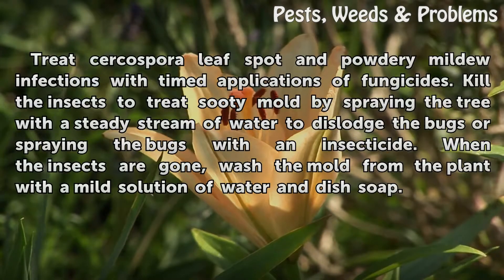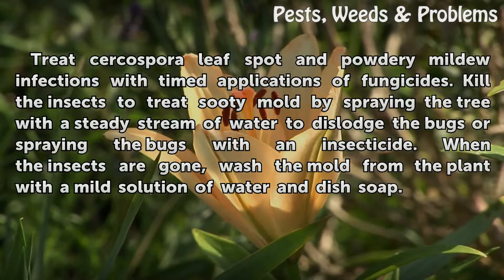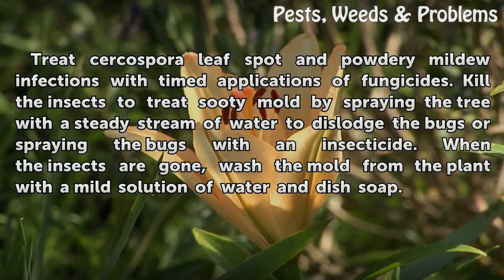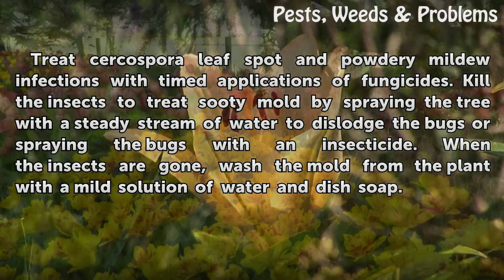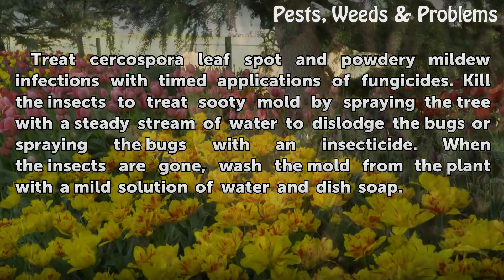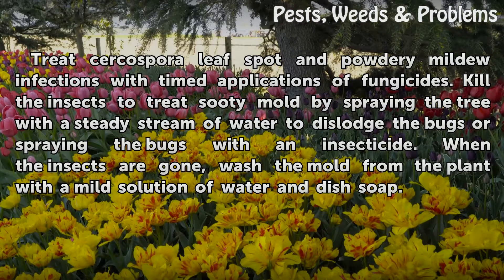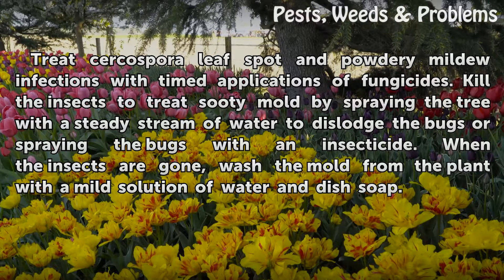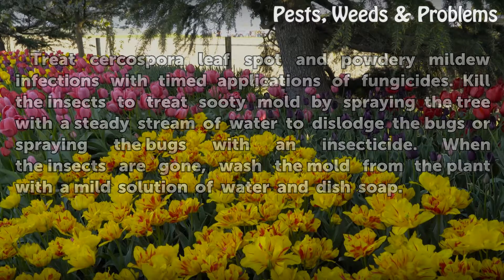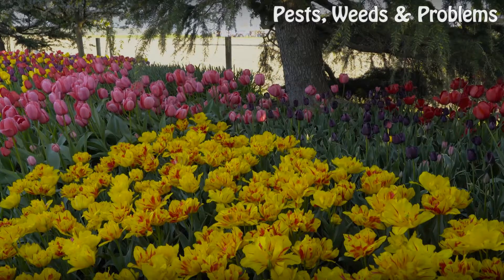Treat Cercospora leaf spot and powdery mildew infections with timely applications of fungicides. Kill the insects to treat sooty mold by spraying the tree with a steady stream of water to dislodge the bugs, or spraying the bugs with an insecticide. When the insects are gone, wash the mold from the plant with a mild solution of water and dish soap.